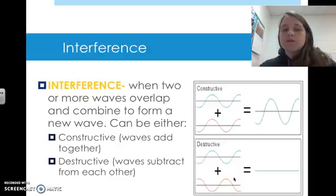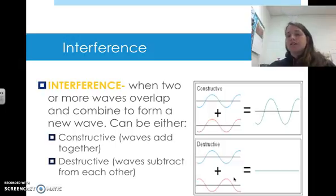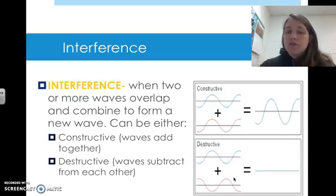Now there's a couple of things for interference. So waves can be interfered with. You can mess them up. When two or more waves overlap, they can combine and they form a new wave. And understand that interference can either be constructive, where the waves combine together to make a greater wave, or destructive, where the waves kind of even out with each other and cause the wave to go away altogether, or at least become smaller.